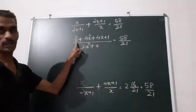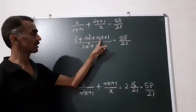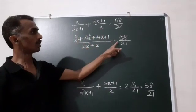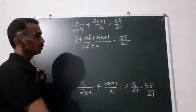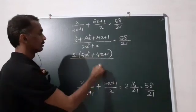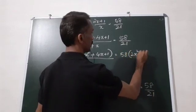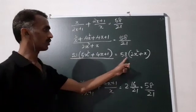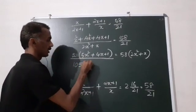x into x gives x squared. And 2x plus 1 into 2x plus 1 is (2x+1) squared, equal to 4x squared plus 4x plus 1. Combining terms: 3x squared plus x equals 58 divided by 21. Cross multiplying again, we get 5x squared. Then 21 into 5x squared plus 4x plus 1 equals 58 times 2x squared plus x.